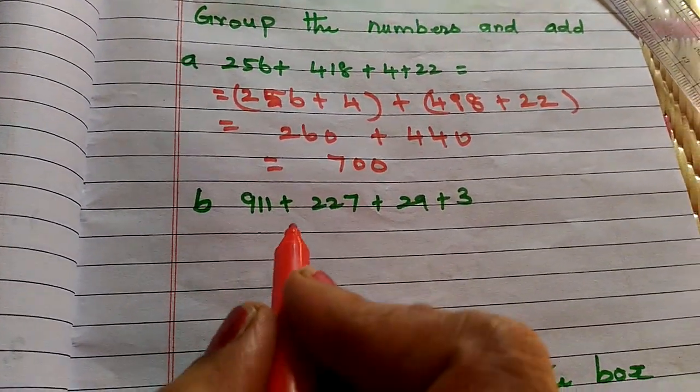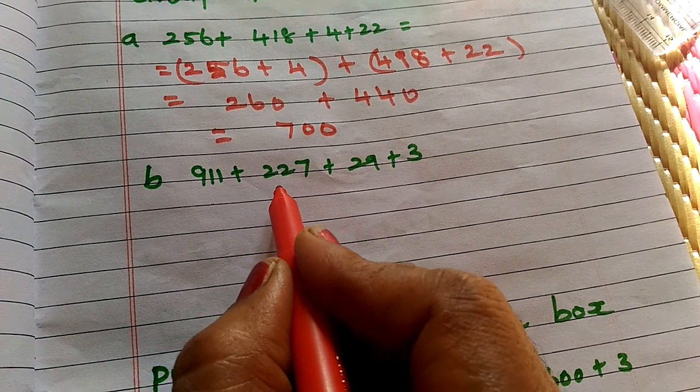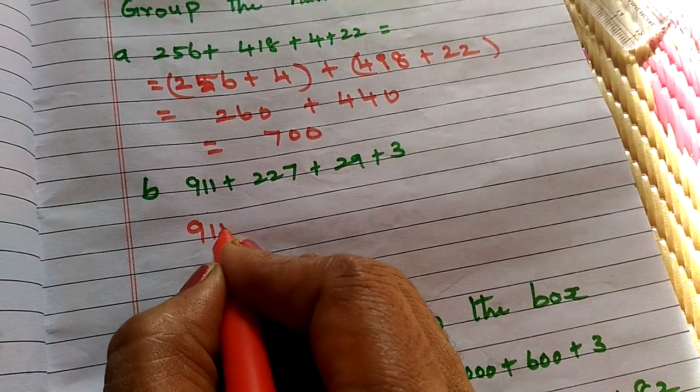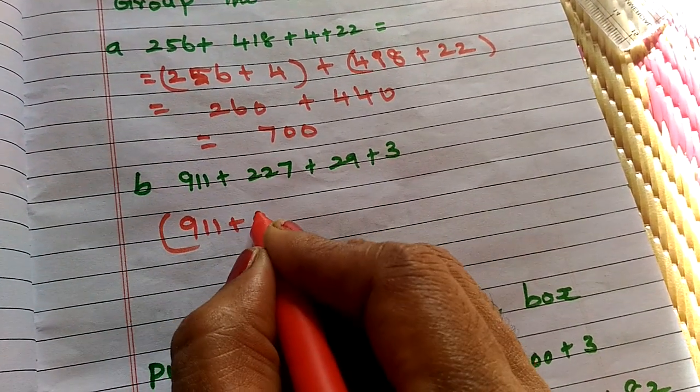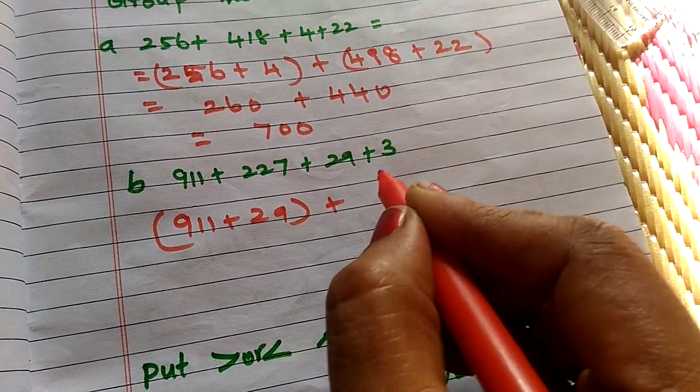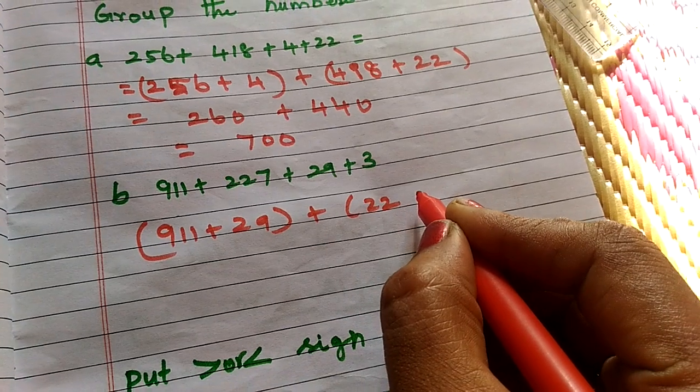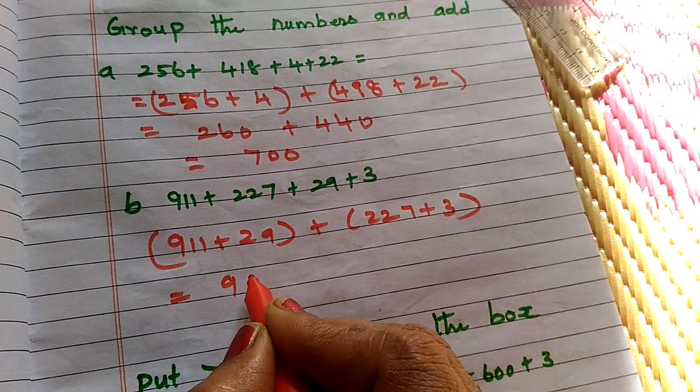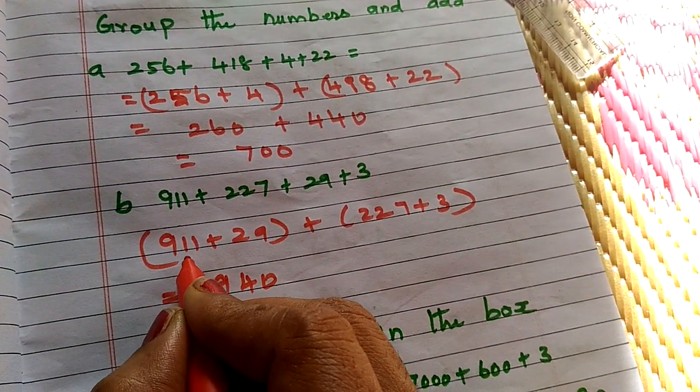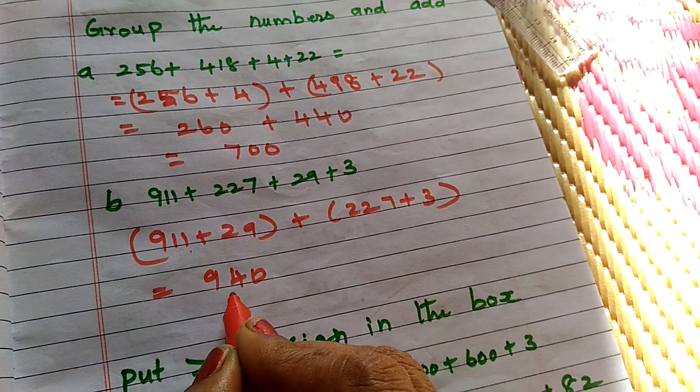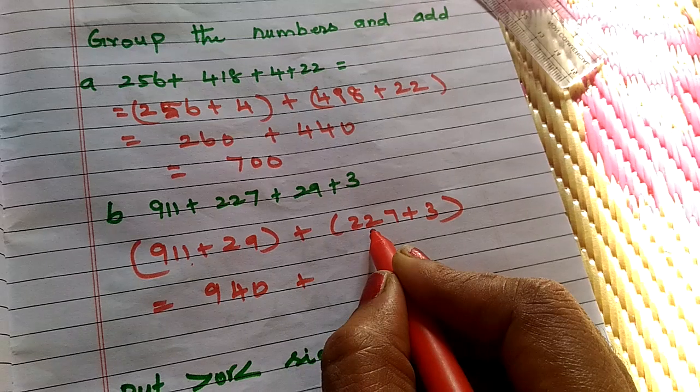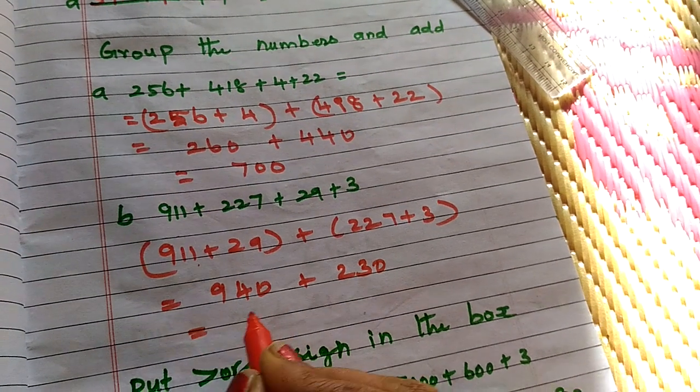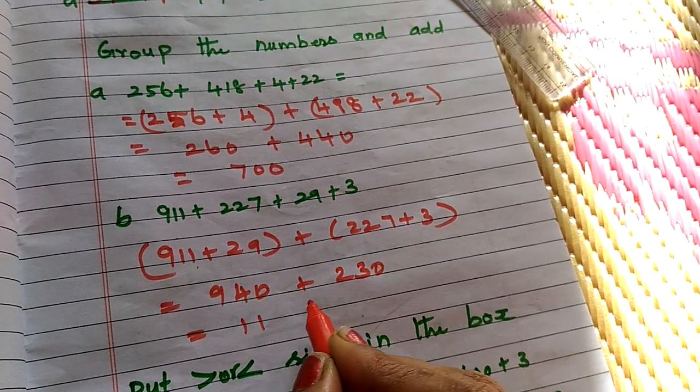One more example. 911 plus 227 plus 29 plus 3. 911 plus 29 plus 227 plus 3. 940. 911 plus 29 equals 940. Then, 227 plus 3 is 230. Answer is 1,170.